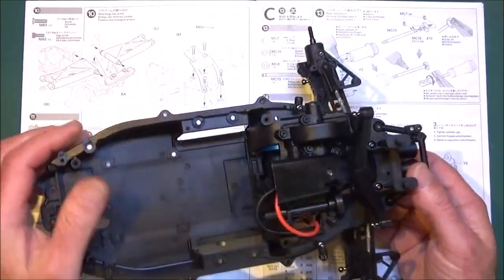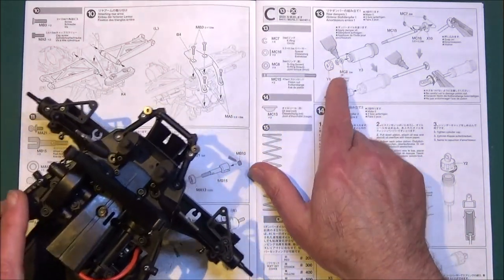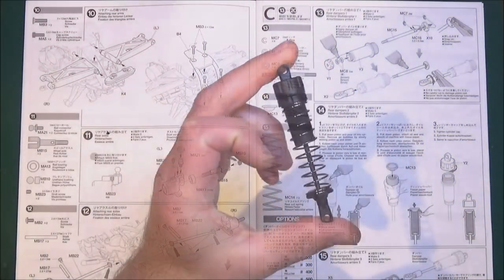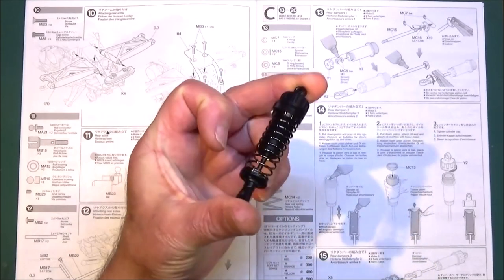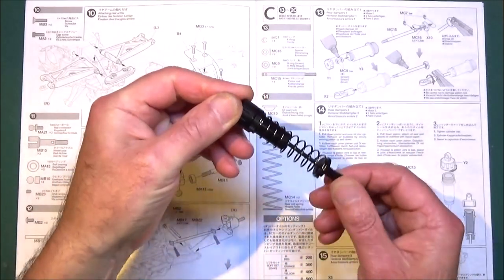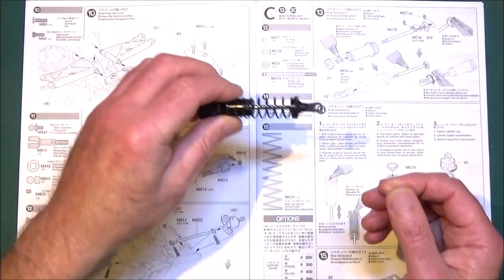That was up to step 12, so opening bag C, straight on to step 13 which is making up the rear dampers. As you can see, I've already done one, it's quite simple, so I'll just show a couple little things that I do when I'm building my shocks.